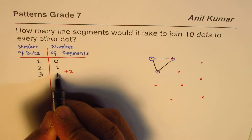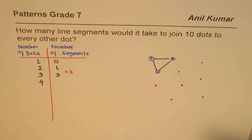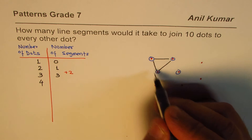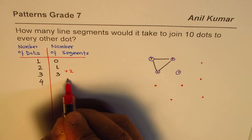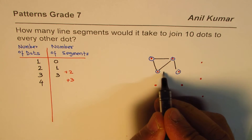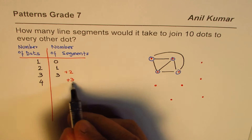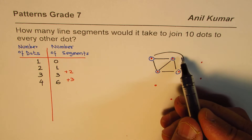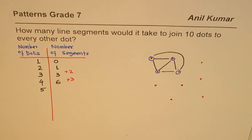If I add another dot to the list, this new dot can be connected with each of the three already there, so we're looking for three more segments. Three more: one, two, three — so three plus three gives us six. You can count and verify: one, two, three, four, five, six.